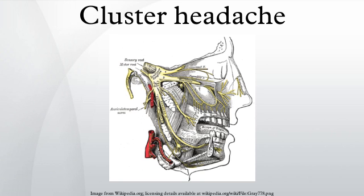Cluster headaches are recurring bouts of excruciating unilateral headache attacks of extreme intensity. The duration of a typical CH attack ranges from about 15 to 180 minutes. Most untreated attacks last less than 60 minutes. The onset of an attack is rapid and most often without preliminary signs that are characteristic in migraine. Preliminary sensations of pain in the general area of attack, referred to as shadows, may signal an imminent CH, or these symptoms may linger after an attack has passed.